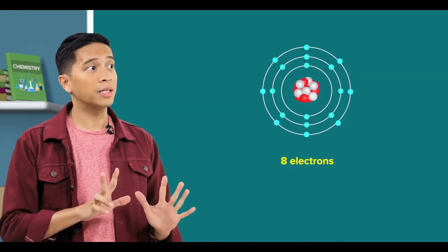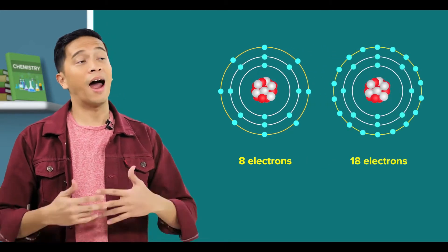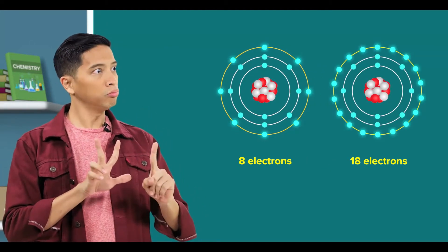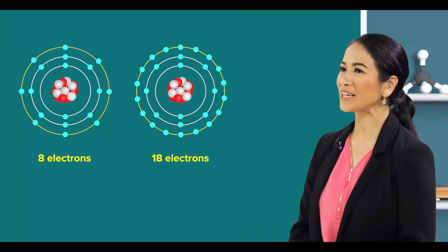You know, some books say that there are only 8 electrons in the third electron shell, while others say there are 18. That's a huge difference. Ah, I had the same confusion when I was learning chemistry.